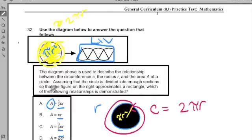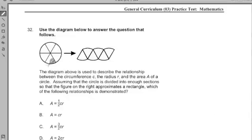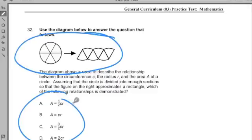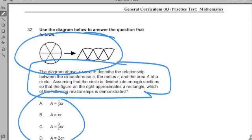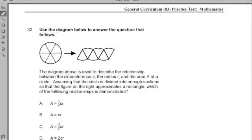Now I go to this third section. First I'm going to read it. The diagram above is used to describe the relationship between the circumference C, the radius R, and the area A of a circle. Assuming that the circle is divided into enough sections so that the figure on the right approximates a rectangle - okay, so I was accurate in thinking this could be a rectangle - which of the following relationships is demonstrated?